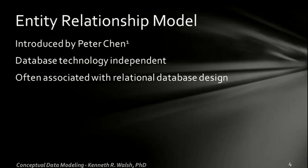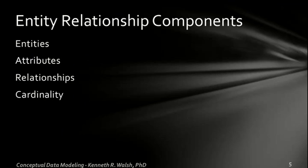So let's get to the details of the Entity Relationship Model. Introduced by Peter Chen and others, popularized by Peter's paper in 1976, it's database technology independent. Today we often associate it with relational database design. The major components in this language or diagramming tool are the entities, the attributes, the relationships, and the cardinality. So let's look at each of those and a couple examples.